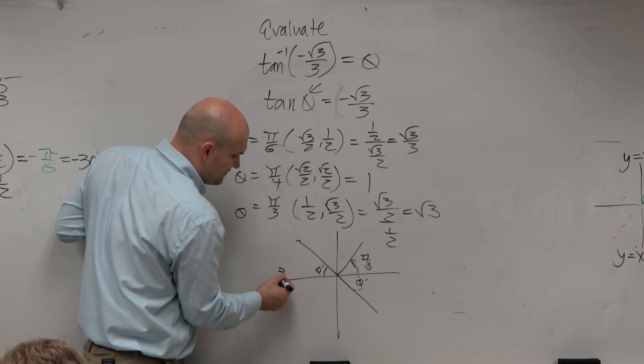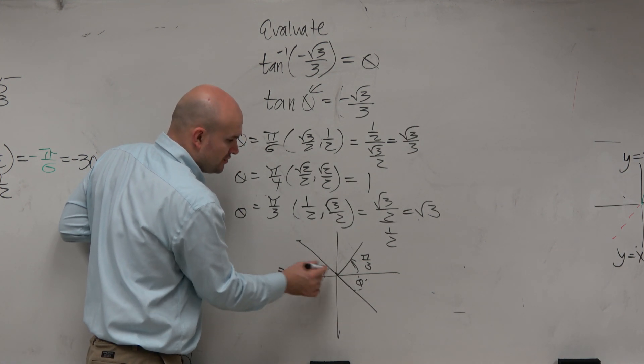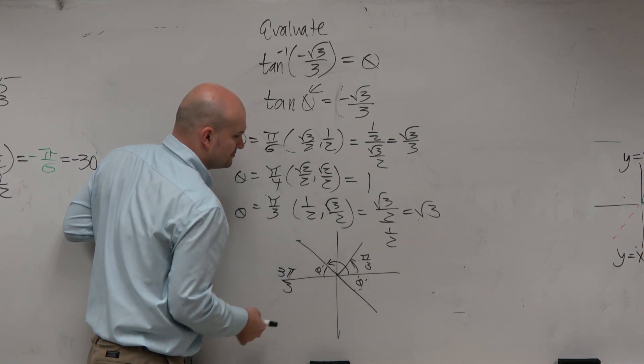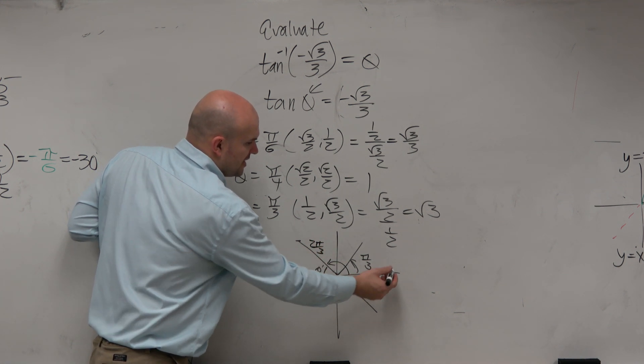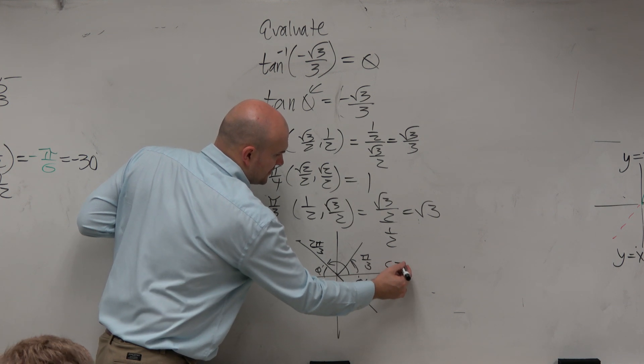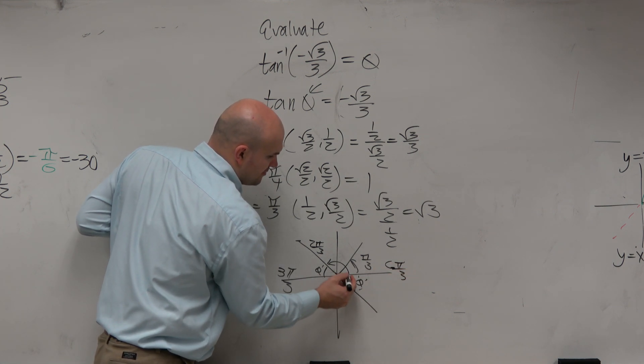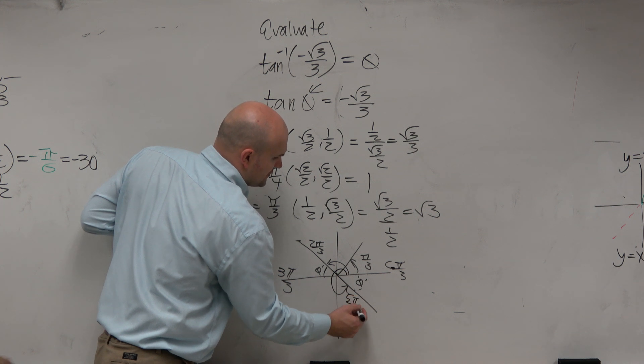So if halfway around a circle is 3 pi over 3, and you're pi over 3 short, then what is this angle? 2 pi over 3. 5 pi over 3. If all the way around a circle is 6 pi over 3, and you're pi over 3 short, then what is this angle? 5 pi over 3.